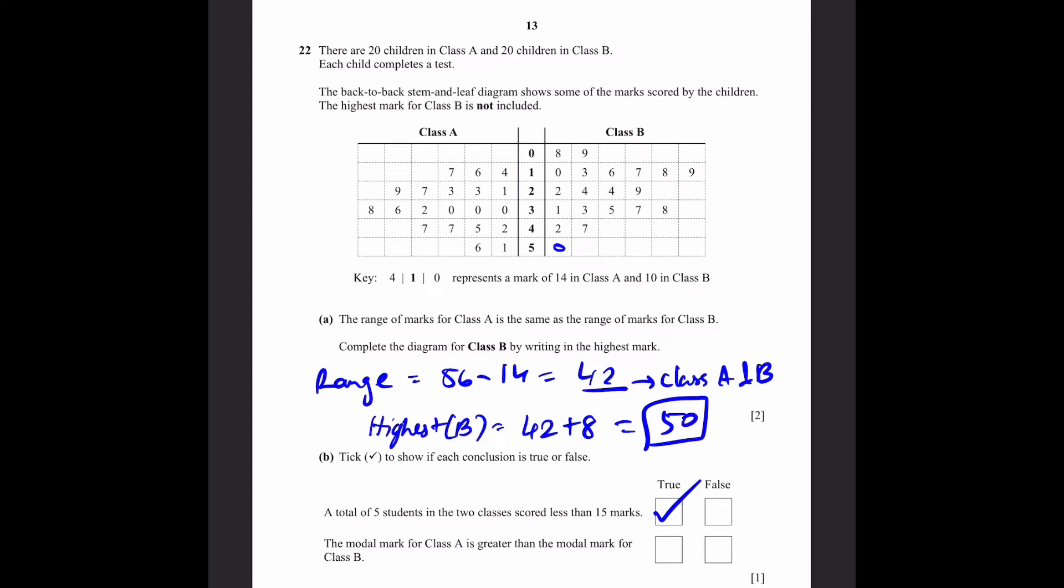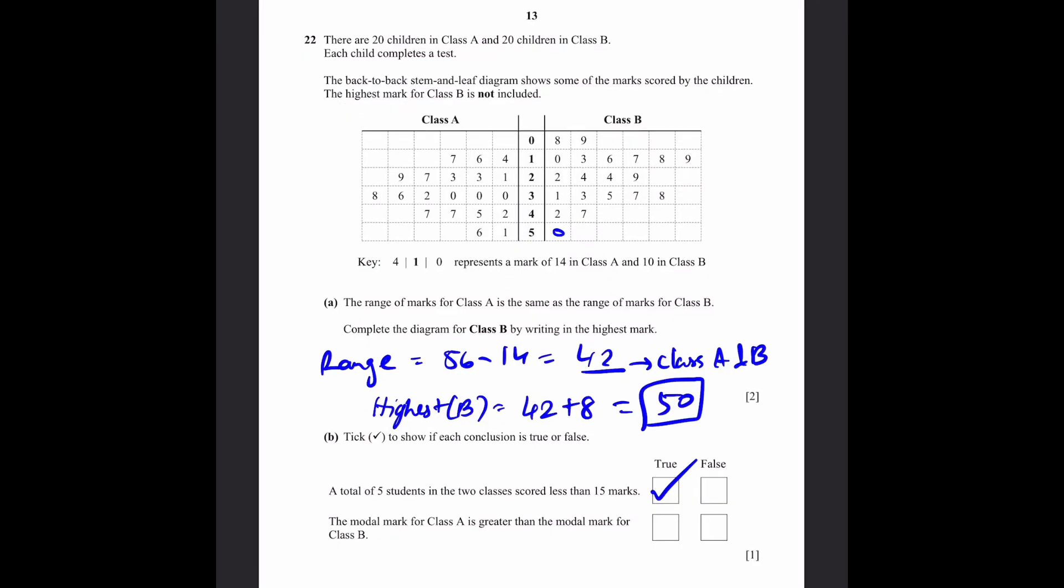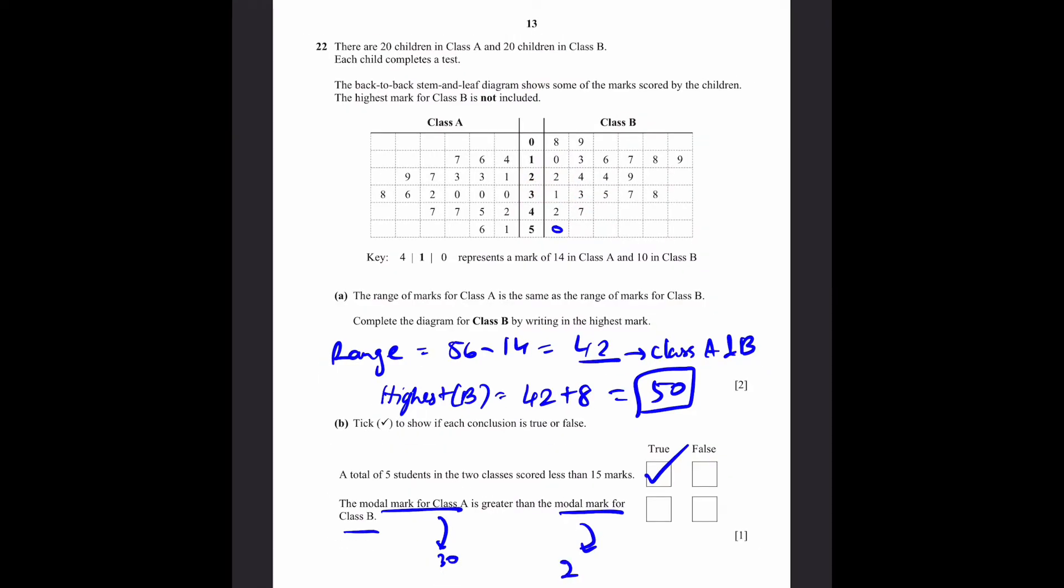The modal mark for class A is greater than the modal mark for class B. Well, the modal mark for class A is 30, since that's the most repeated mark. It's repeated 3 times. 10s is 3, 1s is 0. So, this is going to be 30. And the modal mark for class B is going to be 24, since that's the only one which is repeated twice. So, this 30 is greater than 24, so this is also true. That's the answer.